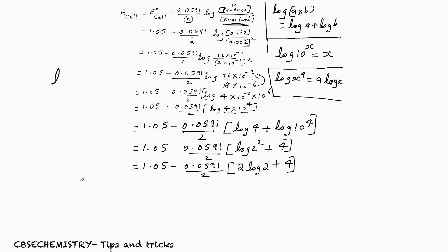And what about the value of log 2? You have to by heart it. It is 0.3010. So, 1.05 minus 0.0591 by 2, 2 × log 2, which is 0.3010 plus 4.